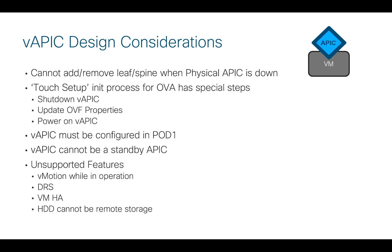If you need to make changes to the virtual APIC — like changing the TEP pool, the infra VLAN, the name, or whatever — normally on a physical APIC you would wipe it and re-answer all the day zero questions. With the VAPIC specifically, you would actually shut it down, go into vCenter and change the OVA or OVF properties, then power it back on and those properties would be changed. The VAPIC itself must be a part of pod one, and since ACI Mini doesn't work with multipods, you should always pick pod one.